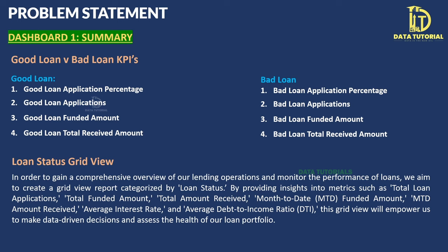The third section of the Summary dashboard is a Loan Status grid view, showing total funded amount and total applications by loan status. A detailed problem statement document is available in the description box — free to download — which covers the requirements in depth beyond what's shown in the presentation.